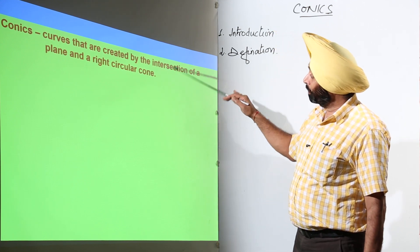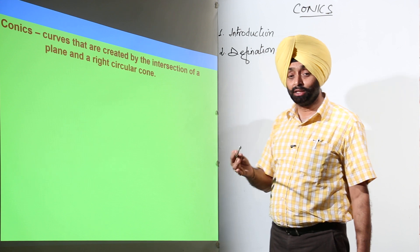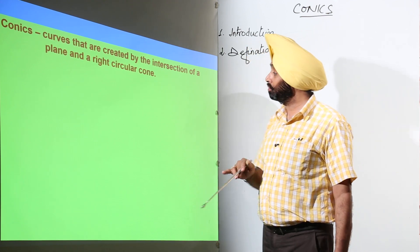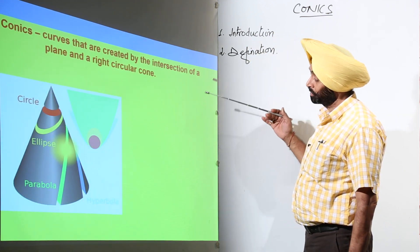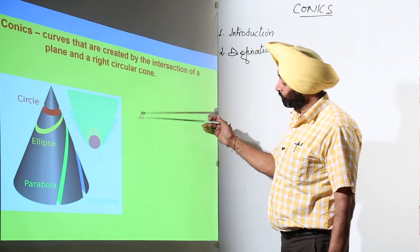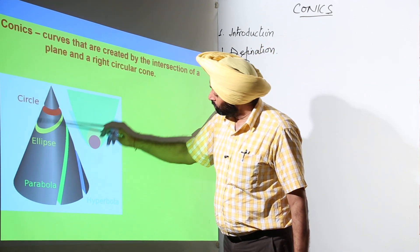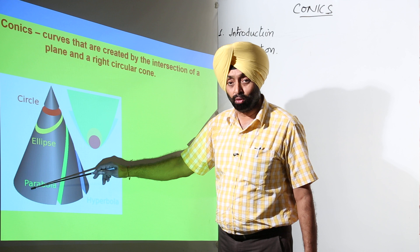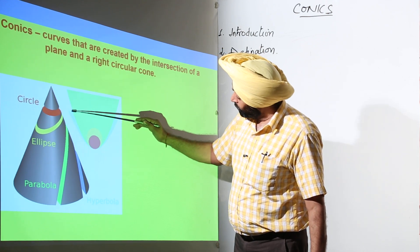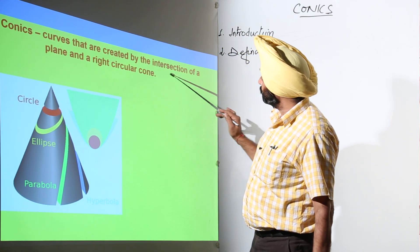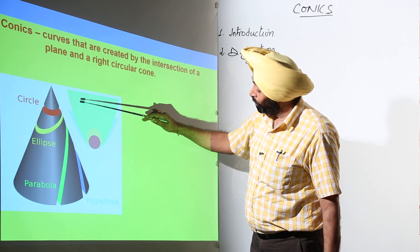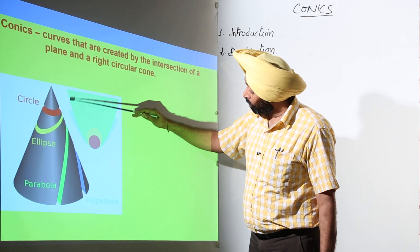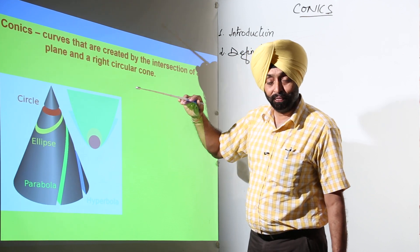Now, by the intersection, how are we generating the different figures? Let me show you that. Just go through this example or this figure. What we are having? A cone - we can say that this is a right circular cone and a plane. It is written intersection of a plane. When a plane is intersected on this cone, then different figures arise.